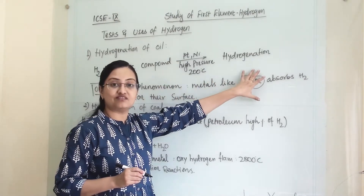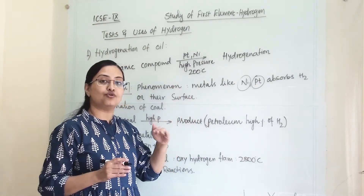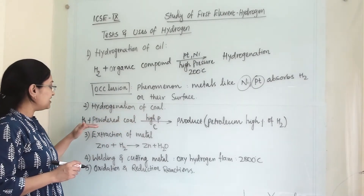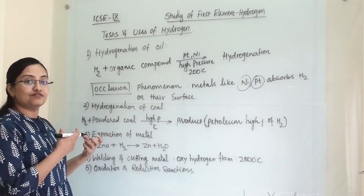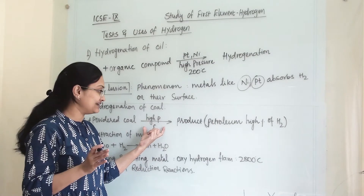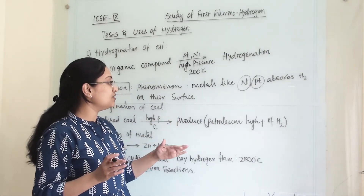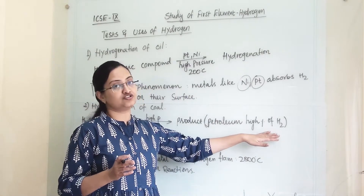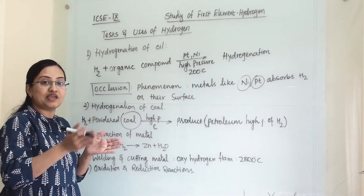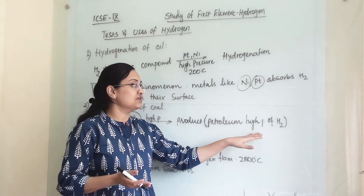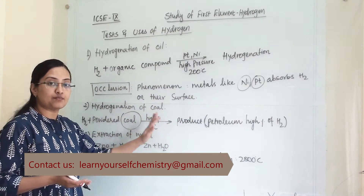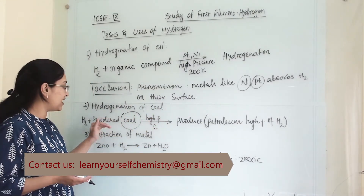Second is the hydrogenation of coal. When we take powdered coal and pass hydrogen gas through it at high pressure with a catalyst, we get a product equivalent to petroleum with a high percentage of hydrogen. In this way we enhance the quality of coal, making it similar to petroleum. So we are improving the capacity and quality of coal via hydrogenation.